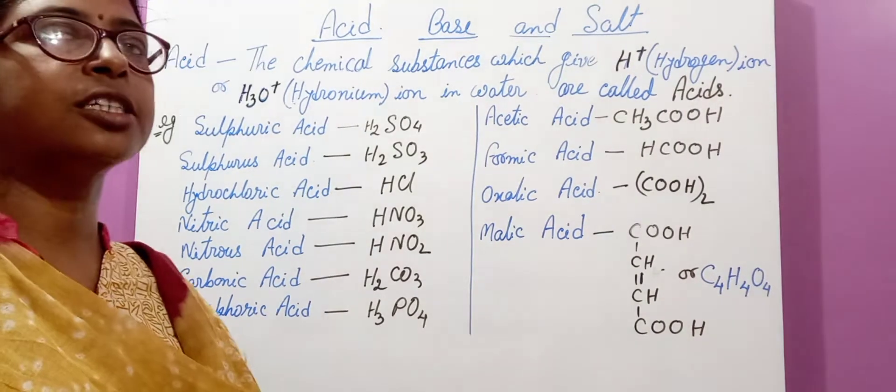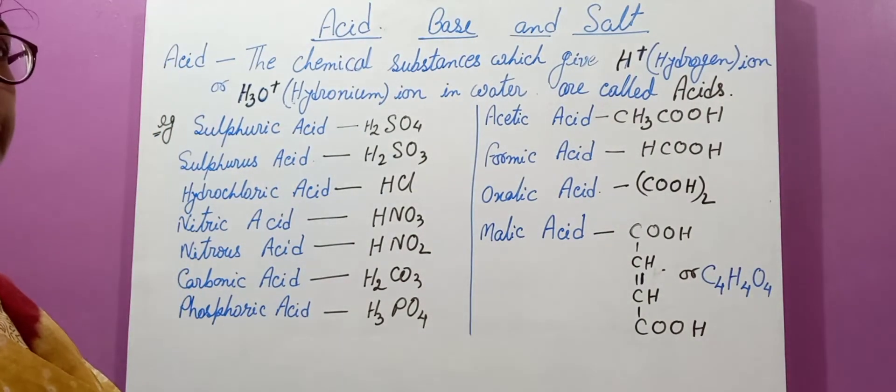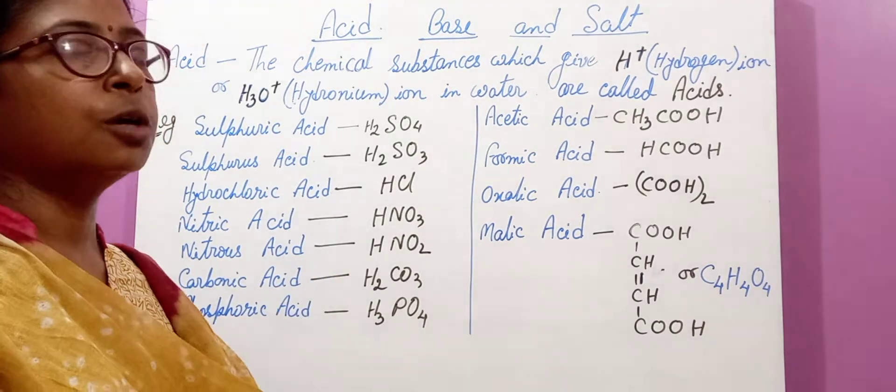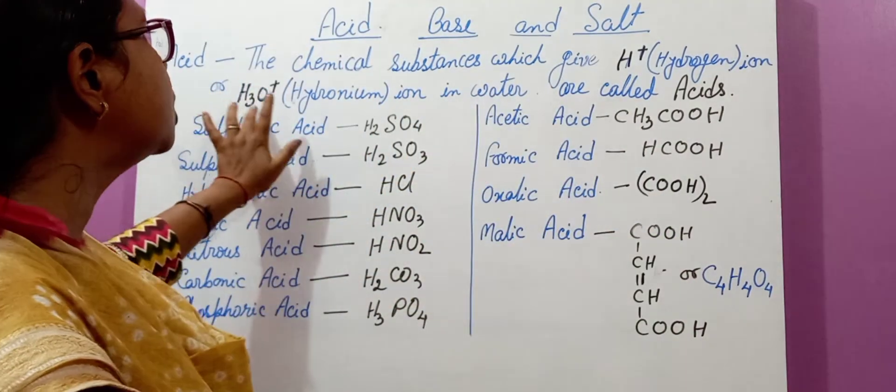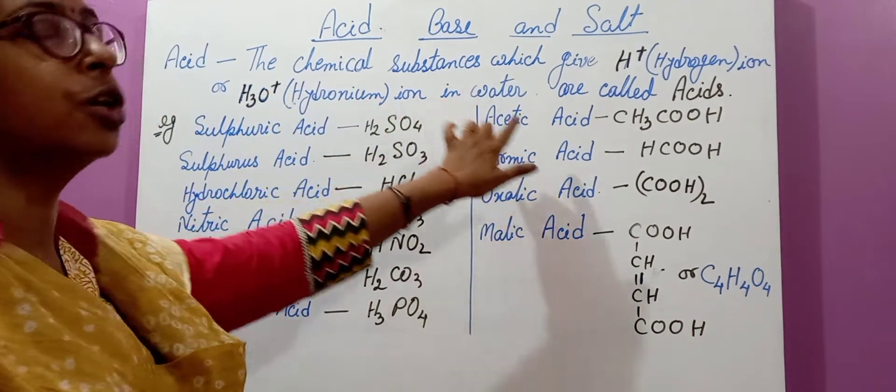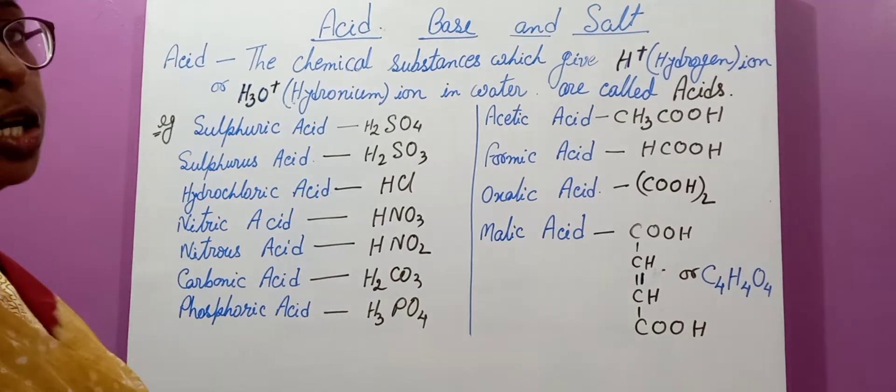Who has given this statement? This statement has been given by Arrhenius. According to the Arrhenius theory, acids are those chemical substances which give hydrogen ion, means H+ ion, or hydronium ion, means H3O+ ion, in water or in aqueous solution. These are known as acids.